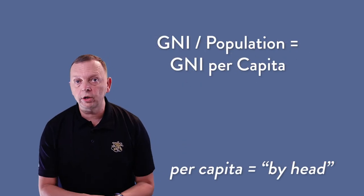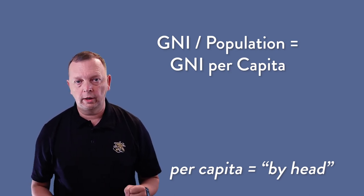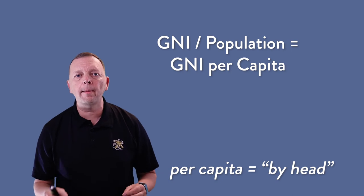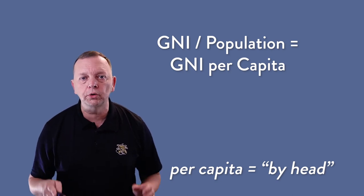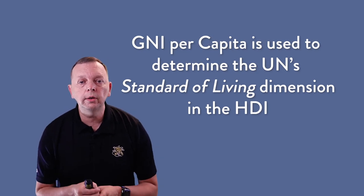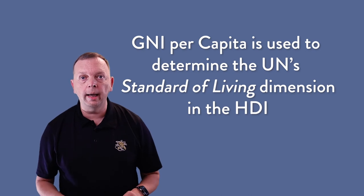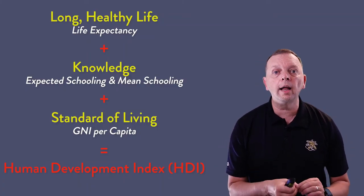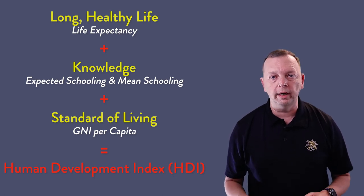The UN takes this gross national income and divides it by the number of people in the country. This gives you what is known as GNI per capita — the amount of income of the country for each person who lives there. It is this GNI per capita that is used to determine the standard of living dimension of a country's HDI. Together with the other two dimensions — long and healthy life, and knowledge — the UN calculates the HDI for each country.